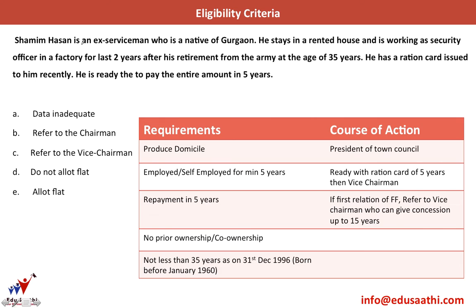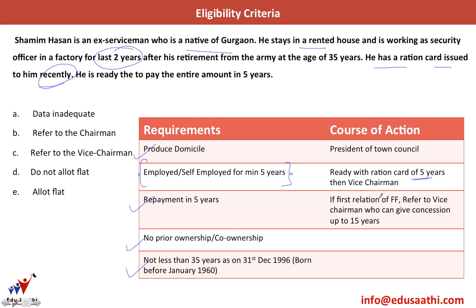Shamim Hassan is an ex-serviceman who is a native of Gurgaon — domicile condition is okay. He stays in a rented house and is working as a security officer in a factory for the past 2 years after his retirement from the army at the age of 35 years — so he is definitely older than 35. He has a ration card issued to him recently. Condition B is a problem since he is employed for only 2 years in Gurgaon. He is ready to pay the entire amount in 5 years and has no prior ownership since he is in a rented house. The ration card was issued recently, so it is not clear whether it covers 5 years. Since this is not mentioned clearly, the data is inadequate to solve this.